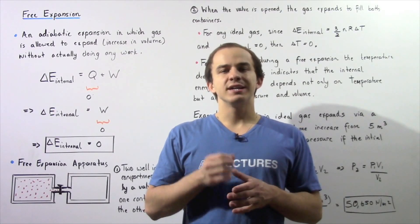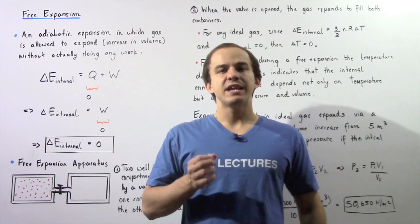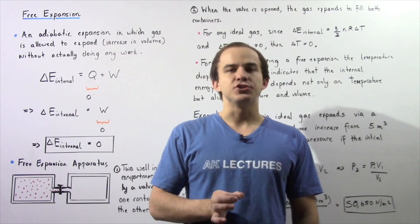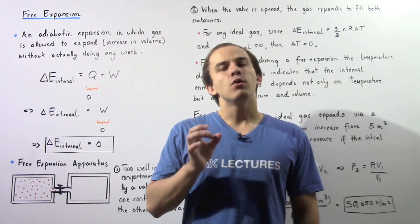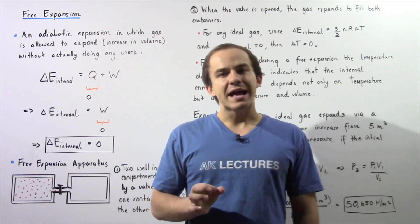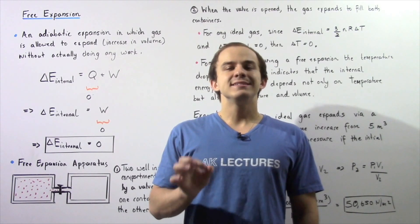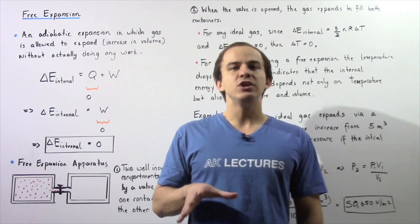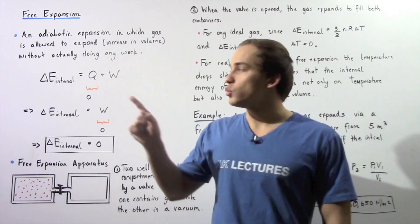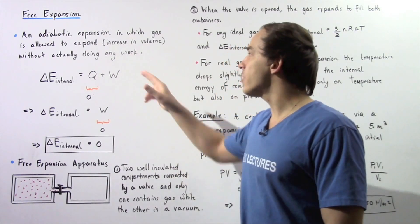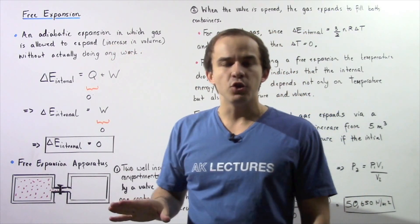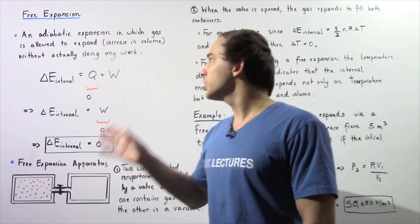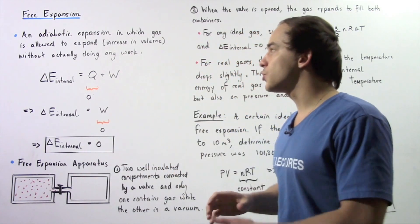One particularly interesting example of an adiabatic expansion is a free expansion of an ideal gas. A free expansion of an ideal gas is essentially an adiabatic expansion in which the gas is allowed to expand — in other words, increase in volume — without actually doing any work on the surroundings.